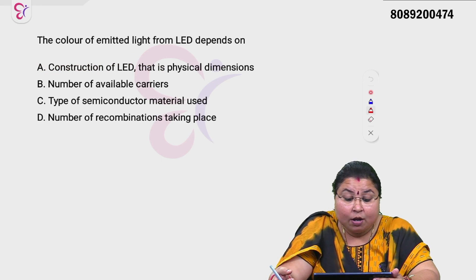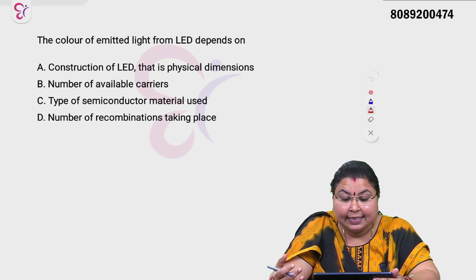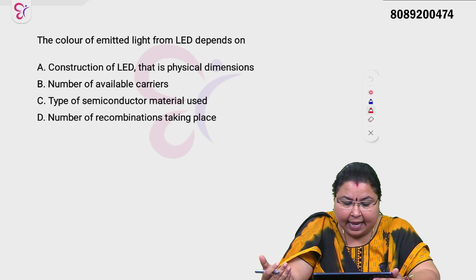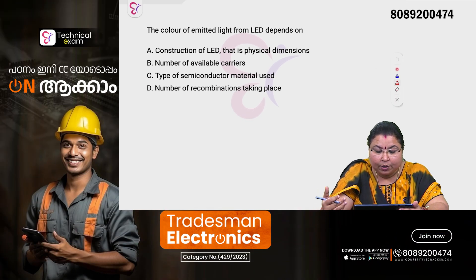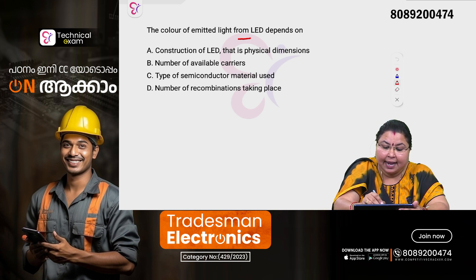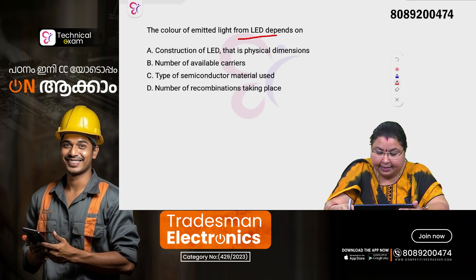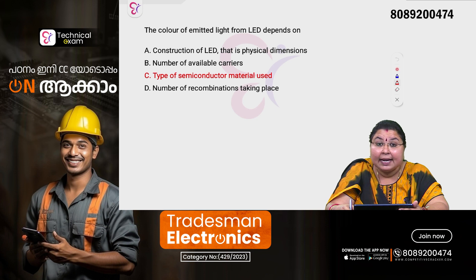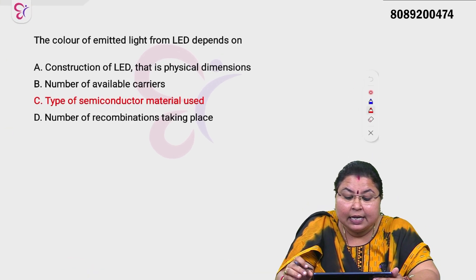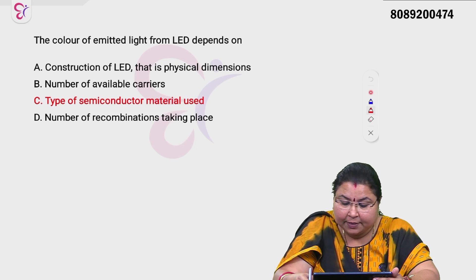The color of the emitted light from an LED depends on: construction of LED (physical dimension), number of available carriers, type of semiconductor materials used, or number of recombinations that take place. The correct answer is the type of semiconductor materials used.